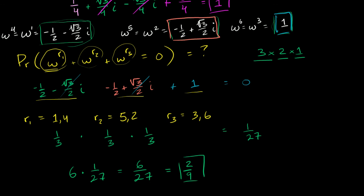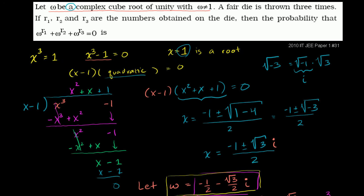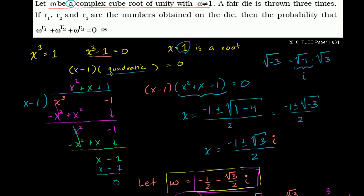And we're done. The probability that omega to the r1 plus omega to the r2 plus omega to the r3, where r1, r2, and r3 are numbers obtained from rolling a fair die, equals 0 is 2 over 9. I thought that was a pretty neat problem.